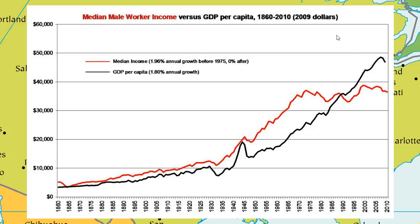Despite the fact that growth has been continuous, growth in incomes stalled in 1972. And typical incomes — this graph uses median male worker incomes, but this is true no matter what indicator of income you use — typical incomes have stagnated now for more than 40 years, going on 45 years of no growth at all in incomes. Before 1970, income consistently rose faster than GDP. Ordinary Americans were getting a bigger and bigger slice of the expanding American pie. Since 1970, the American pie has continued to grow at the same historical rate as always, but the slice going to ordinary Americans has shrunk and shrunk and shrunk.